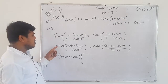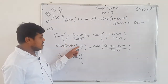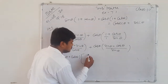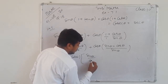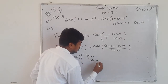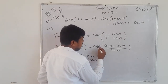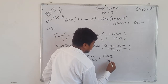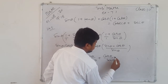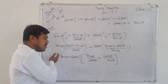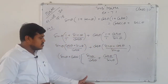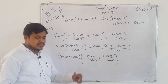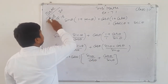After taking sin θ + cos θ as common outside the bracket, the remaining inside the bracket is: sin θ/cos θ plus cos θ/sin θ. Now take LCM of sin θ and cos θ, which is sin θ·cos θ.